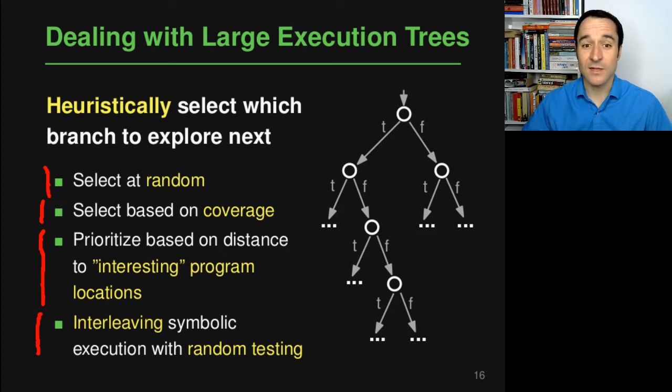And finally there's also the option to interleave symbolic execution with random testing. So maybe if you have tried some of the above heuristics for a couple of executions and the program doesn't make more progress, then you take the existing inputs and maybe give them to a fuzzer which will mutate them in a more random way. And then once you've covered some more code, you're then going back to symbolic execution. So these are all different ways of addressing this problem, and none of these heuristics really solves the problem in a sense that they magically help you to explore the entire tree, but they are all ways to address that problem in practice.